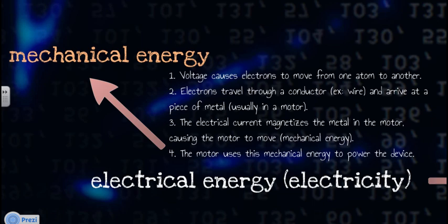This is how you go from electricity to mechanical energy. So again, all of these things start with the same exact thing, voltage. Voltage causes the electrons to move from one atom to another. These electrons travel through a conductor, like on a wire, and they arrive at a piece of metal, which is usually in a motor.